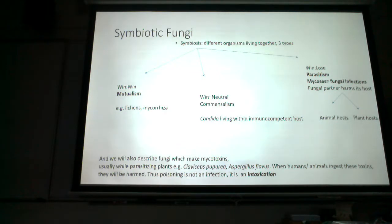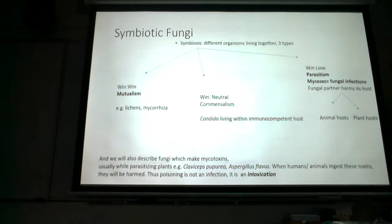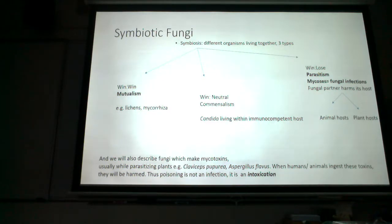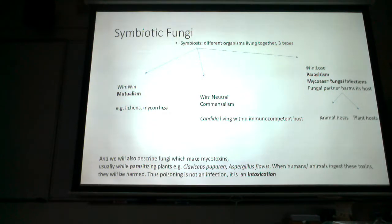Mycoses are fungal infections, where the fungal parasite invades another organism and causes harm. We'll look at fungi causing infections in plants, and fungi causing infections in humans and other animals. One fungus we'll describe makes a toxin called ergotamine. We'll also discuss mycotoxins — toxins made by fungi.